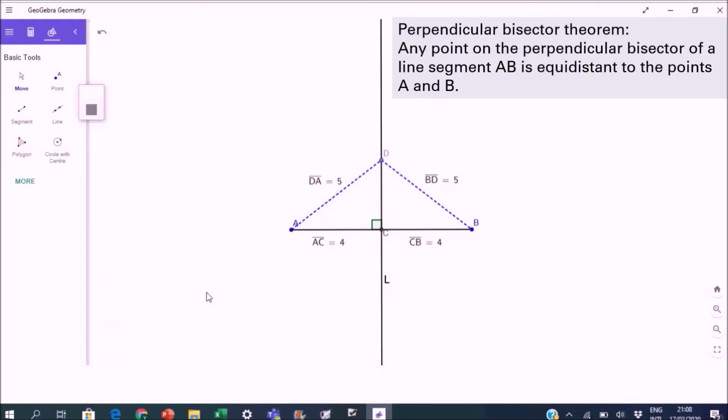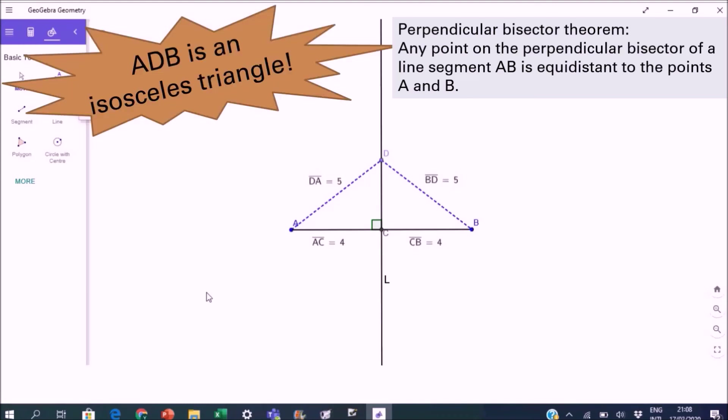Your diagram should look like this. And what type of triangle is ADB? Yes, it is an isosceles triangle. AD and BD are both 5 centimeters. What if you use a different point D on the perpendicular bisector? Do we still have an isosceles triangle? Let's move D and see what happens. What do you notice? AD is always equal to DB.